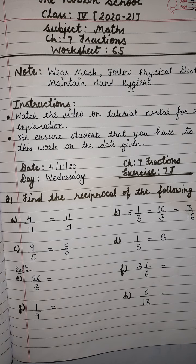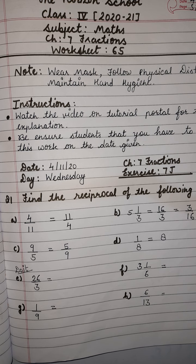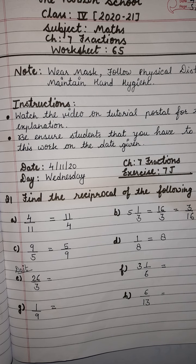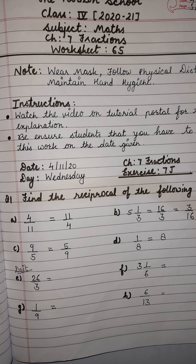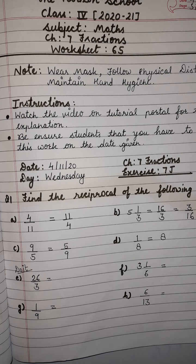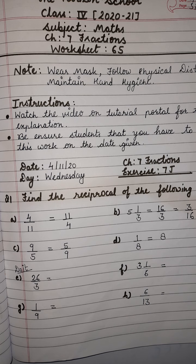First of all, let me explain what is reciprocal. The reciprocal of a fraction is to just interchange the numerator and the denominator. To find the reciprocal of a number, just interchange the numerator and denominator — the numerator is converted into the denominator and the denominator is converted into the numerator.